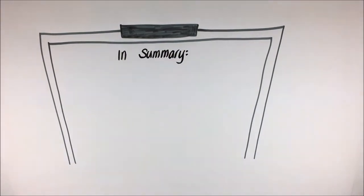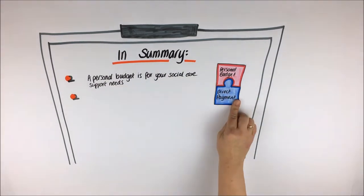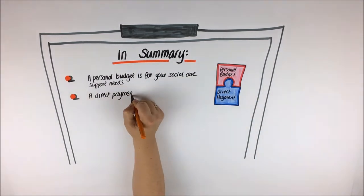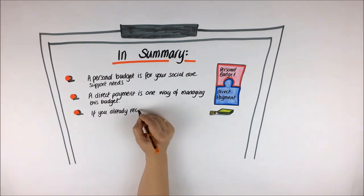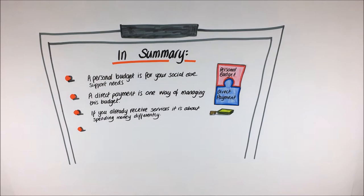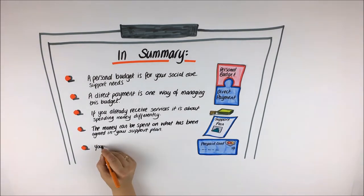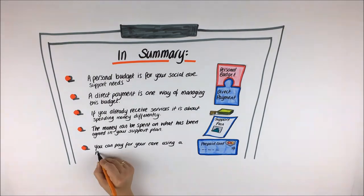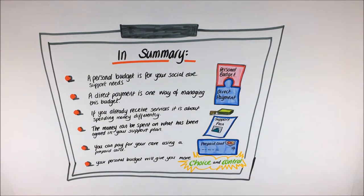In summary, a personal budget is for your social care and support needs. A direct payment is one way of managing this budget. If you already receive services, it is about spending the money differently. The money can be spent on what has been agreed in your personalized support plan. You can pay for your care and support using a prepaid card. A personal budget will give you more choice and control over how you live your life with the support that you need.